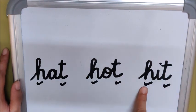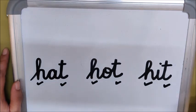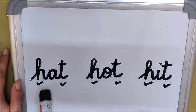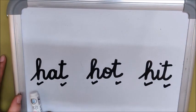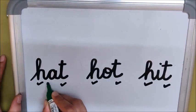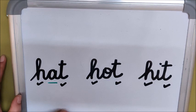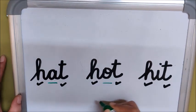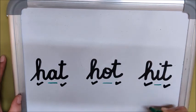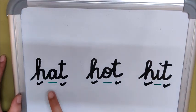'H' is the first sound in all the words. 'T' is the last sound in every word. So what is different, children, in all these words? Think, children, and look at all these words carefully. Did you find it? In the word 'hat', the middle sound is 'aaa'. In the word 'hot', the middle sound is 'oaa'. And in the word 'hit', the middle sound is 'eaa'. Only the middle sound is different in all these words.